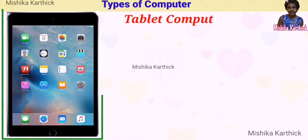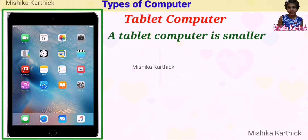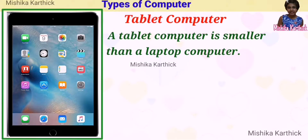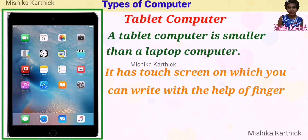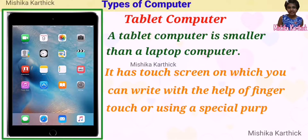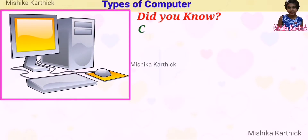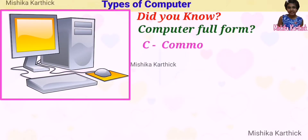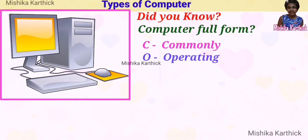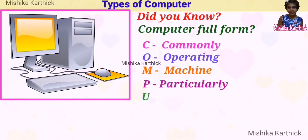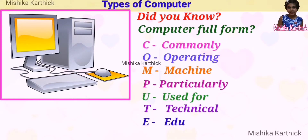Tablet computer: a tablet computer is smaller than a laptop computer. It has a touch screen on which you can write with the help of finger touch or using a special purpose pen called a stylus. Did you know the computer full form? C for Commonly, O for Operating, M for Machine, P for Particularly, U for Used for, T for Technical, E for Educational, and R for Research.